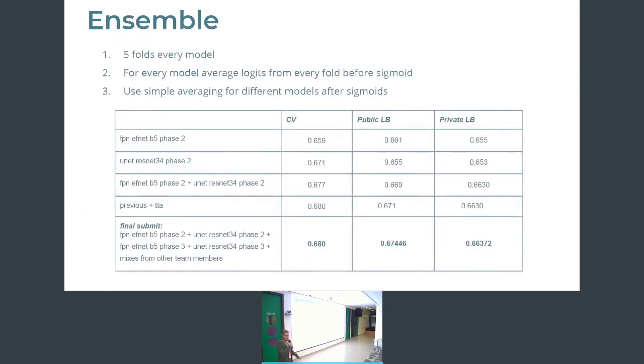And of course, initially, when you join this competition, the forum was full of messages that data is rather noisy and ensembling is the key in this competition. And in fact, it is true. And you can see that using only two models, it gives you, it increases your score bigger in both stages: in cross validation and public and private leaderboard. And also you can see here that test time augmentations gave us boost on local validation, on public leaderboard, but didn't give anything on private leaderboard.